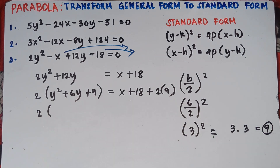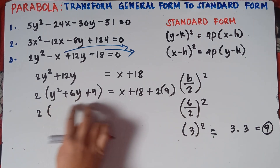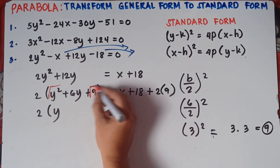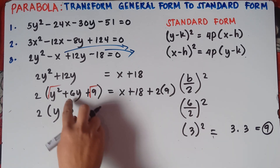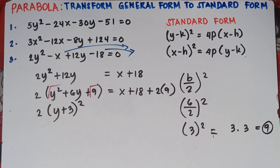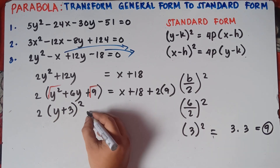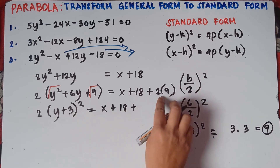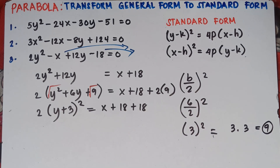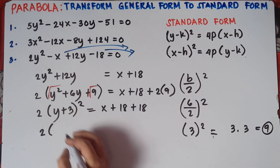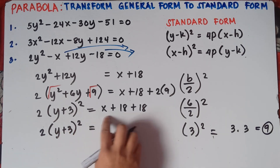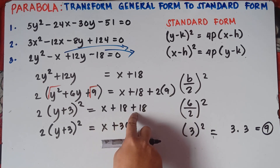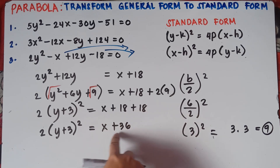Copy 2. This is now a perfect square trinomial — make it into a square binomial. Get the square root of y squared, which is y. Get the square root of 9, which is 3. Copy the sign of the middle term, which is plus. So we have 2(y + 3) squared. On the right side: copy x plus 18, and then add 18. Since 18 plus 18 equals 36, this becomes x plus 36. Remember, you cannot add x and 18 since 18 has no variable.